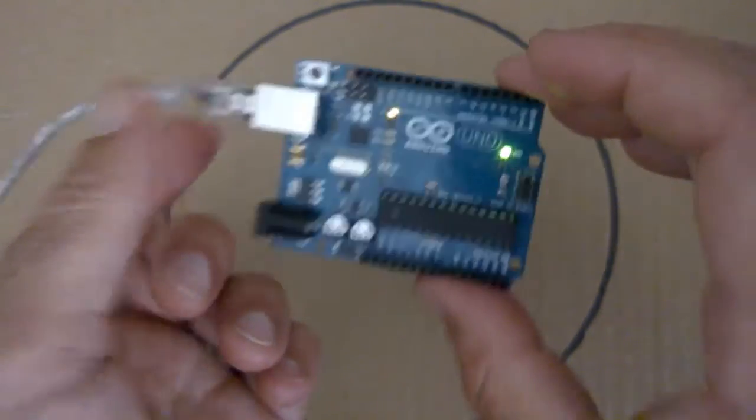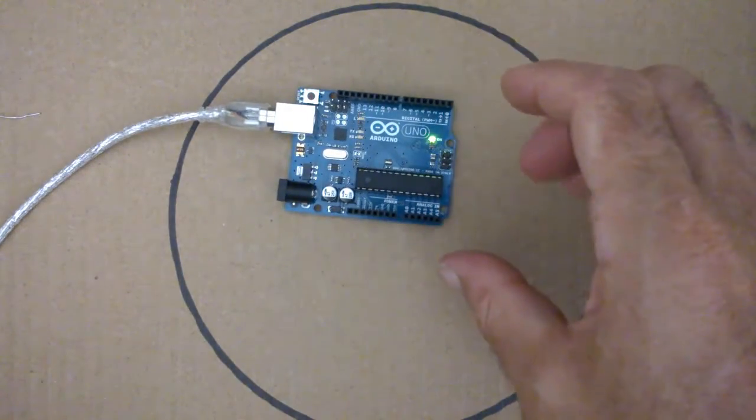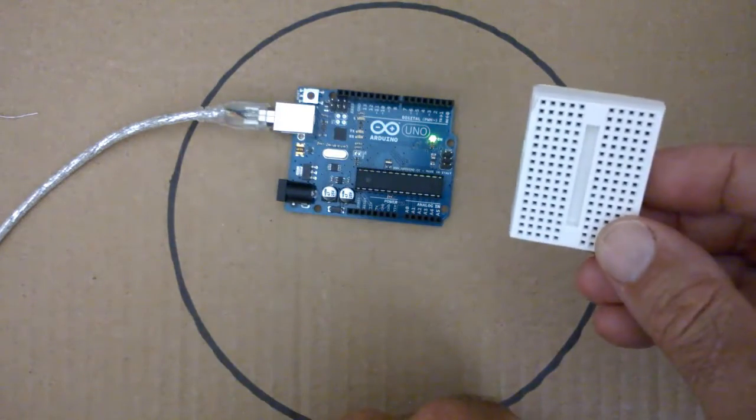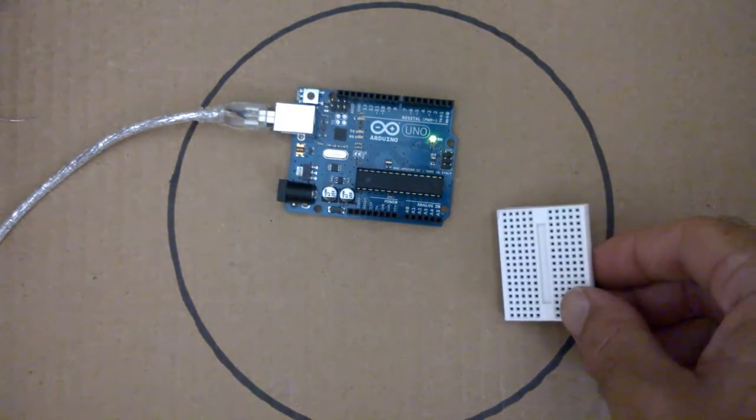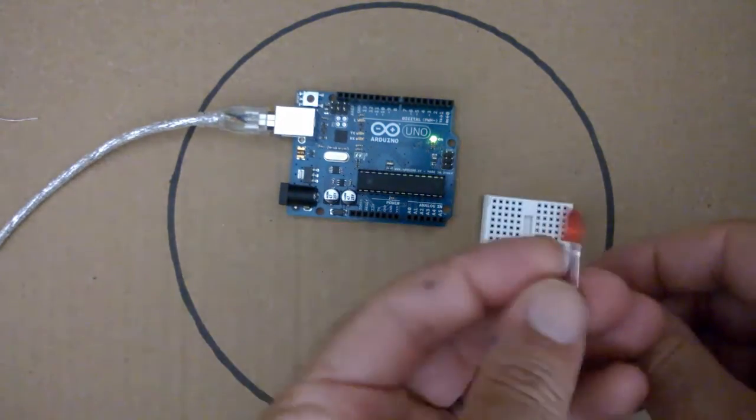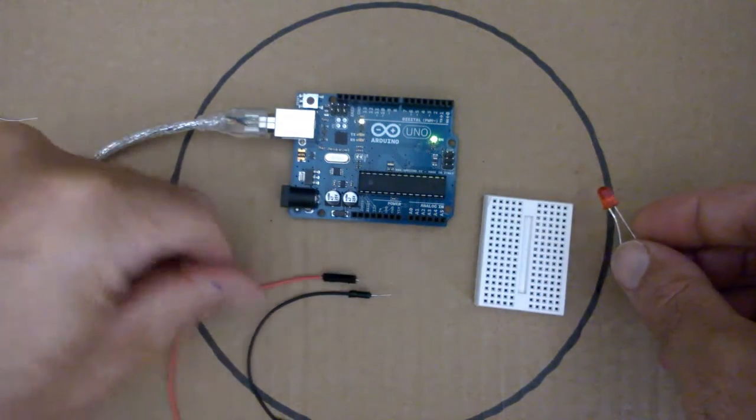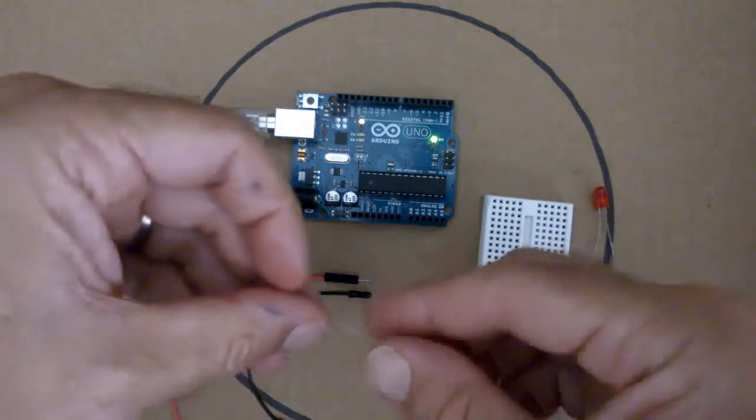Now what we're going to do is connect an external LED. To do this you will need a breadboard, here we have a mini breadboard, you will need an LED, doesn't matter which color, you will need a couple of jumper wires and a resistor.